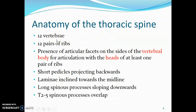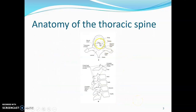There are 12 thoracic vertebra that articulate with 12 pairs of ribs. There is the presence of articular facets on the sides of the vertebral body for articulation with the heads of at least a pair of ribs. The thoracic vertebra have short pedicles that project backwards. They also have laminae that are inclined towards the midline and a long spinous process that is downward sloping. The spinous processes of T2 to T5 usually overlap. The pedicles are between the body and the articular surface, and the laminae are posterior while the pedicles are anteriorly located.